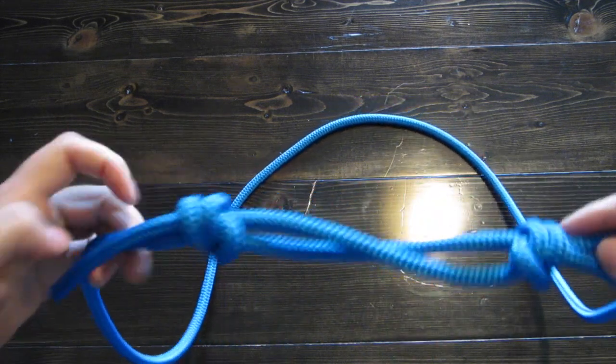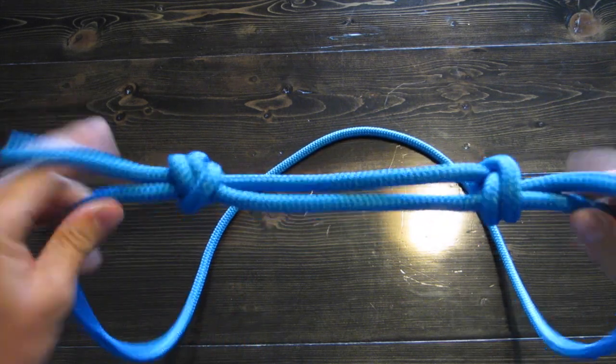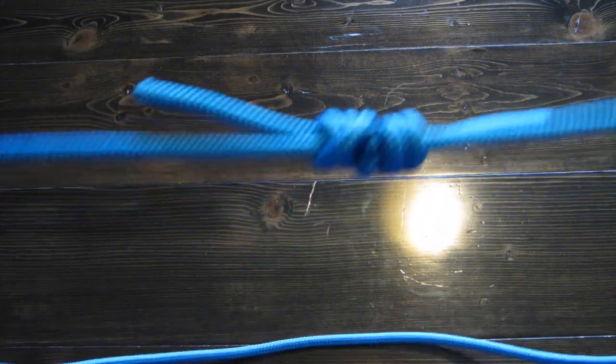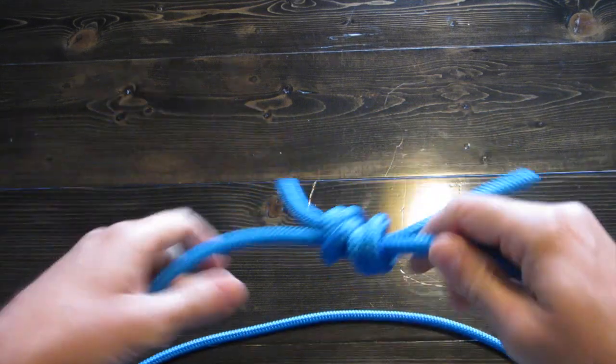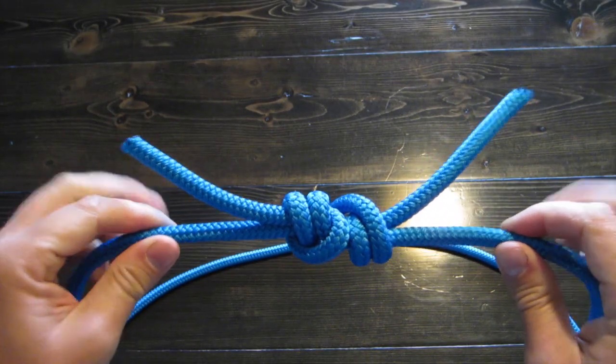Okay. Looks good. Got that. And, it just slides together. And, the tighter you pull, the tighter those knots get. And, that is your double fisherman's knot.